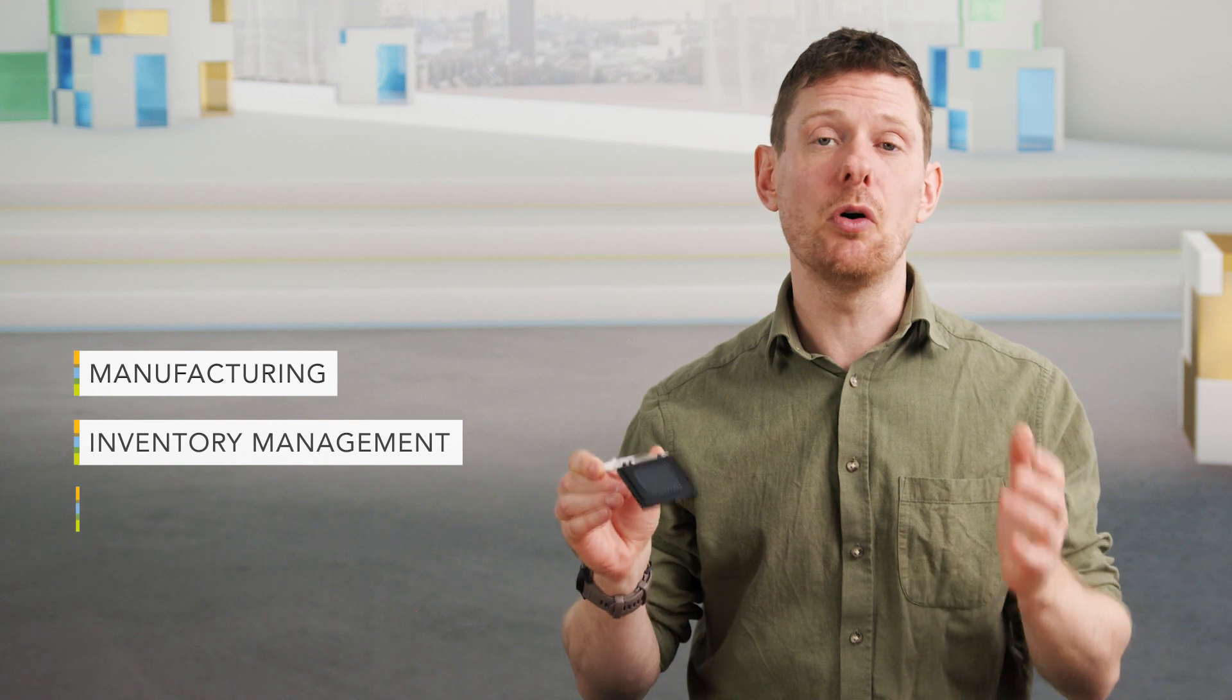NXP's uCode9xm is an IC that's integrated into labels adding track and trace functionality for industrial and IoT applications such as manufacturing, inventory management, or item tracking. Now let's dive a little bit deeper.